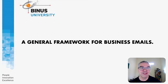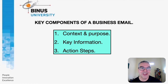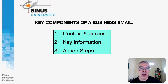The topic we're going to look at is a general framework for business emails. This framework can be useful for whatever kind of situation you are writing a business email in. We're going to look at three areas representing the three main sections of a business email: context and purpose, key information, and action steps.